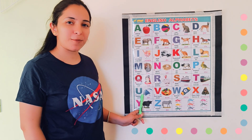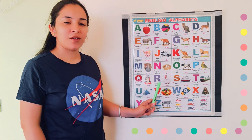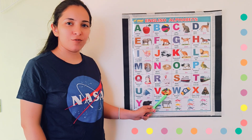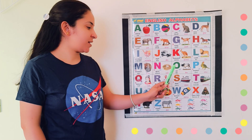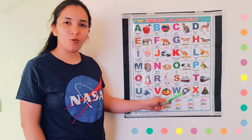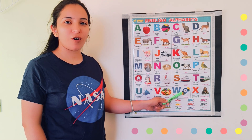U, U for umbrella. V, V for vegetables. W, W for watch.